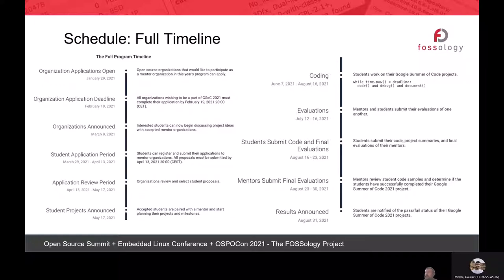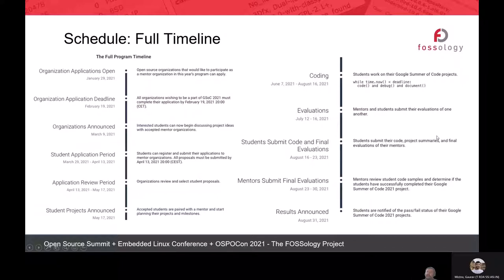During the coding period, mentors and students are completely involved. Students start to know about the open source project and dig deeper into it, while mentors help whenever required. After about a month we get the first evaluation, where mentors evaluate the students' work. After evaluations, the second phase of coding begins, and finally students submit their code for final evaluation. This year we had around seven students and all successfully completed the project.